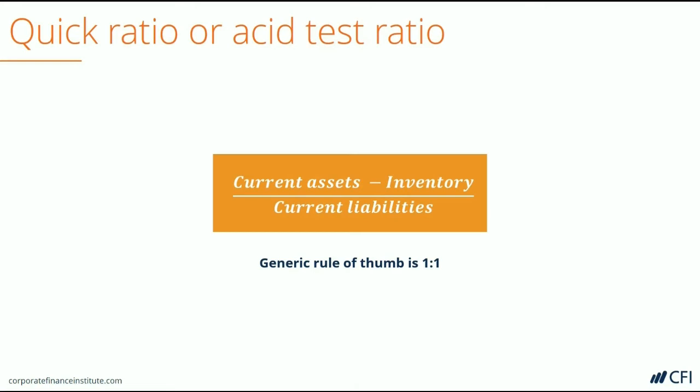It's best practice to calculate both the current ratio and the quick ratio and then compare the two. This will shine a light on how much of the current assets' value is in inventory. Depending on how quickly the company can turn over its inventory, an analyst may determine that it's fine to have a lot of current assets tied up in inventory and that they're liquid. Or an analyst may determine that it's too risky, and then the quick ratio becomes more appropriate.